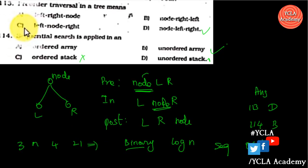Pre-order traversal means: given a tree with a node, left child, and right child, you print the node first, then traverse left, then right — that is Node, Left, Right. In-order traversal is Left, Node, Right. Post-order traversal is Left, Right, then print the node. So for pre-order, Node Left Right is correct — Option D.